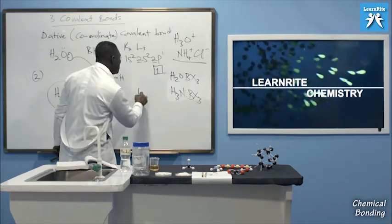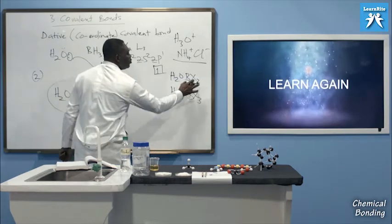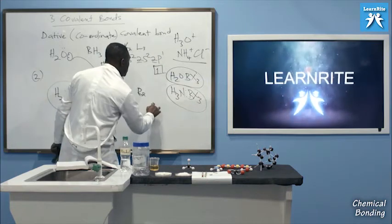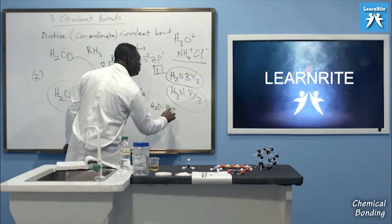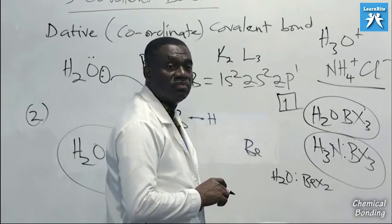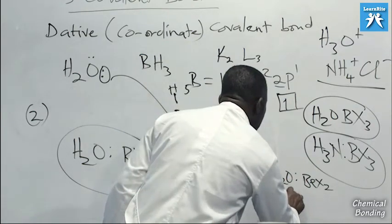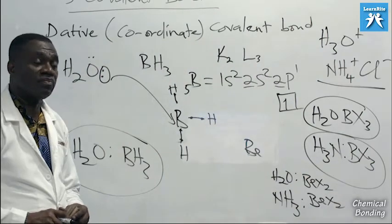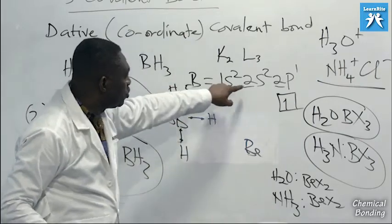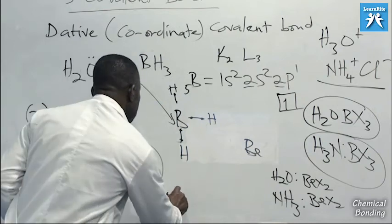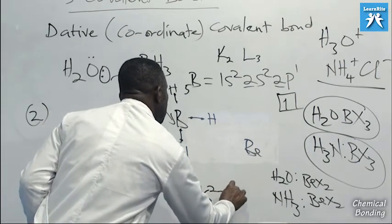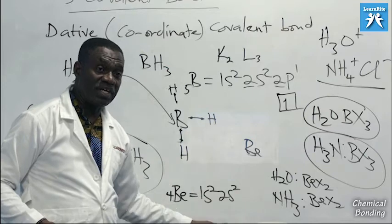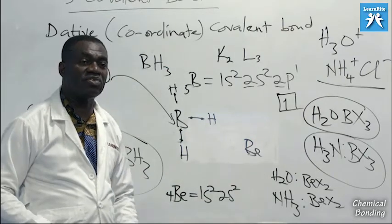You can also see beryllium (BeX2) compounds acting as electron acceptors. Beryllium is atomic number 4 with configuration 1s² 2s². The 2p orbital in beryllium is completely empty and can take up to six more electrons. So water (H2O·BeX2) or ammonia (NH3·BeX2) can donate lone pair electrons into the empty 2p orbital of beryllium through dative covalent bonding.